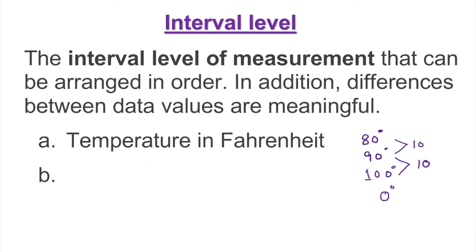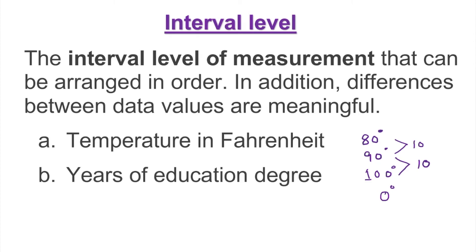Since Fahrenheit temperature doesn't have a natural zero starting point, we'll discuss that more with ratio. The next interval example is year of graduation — for example, 2021, 2020, or 2015. You can order graduation years from highest to lowest, and you can subtract them to get a meaningful difference. Therefore, year of graduation is interval level data.